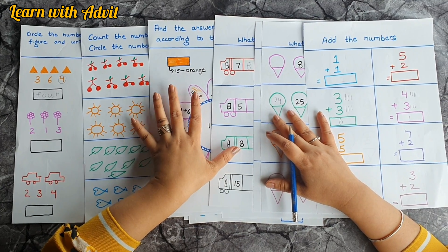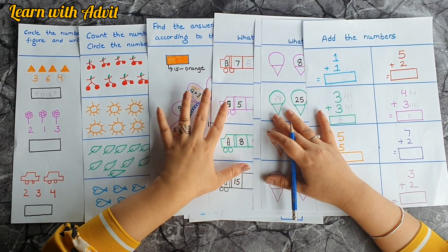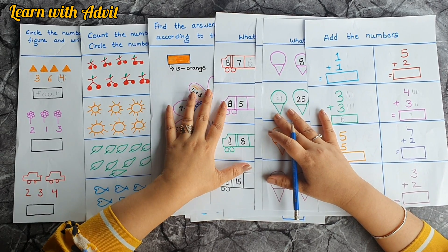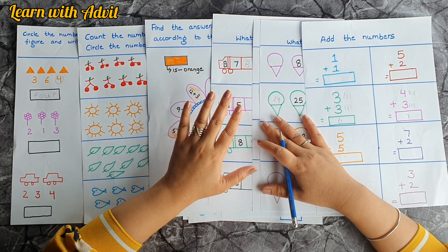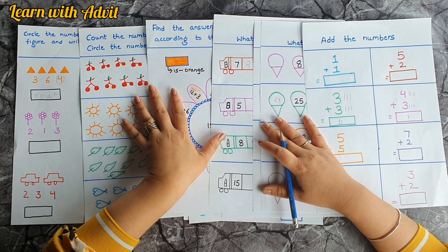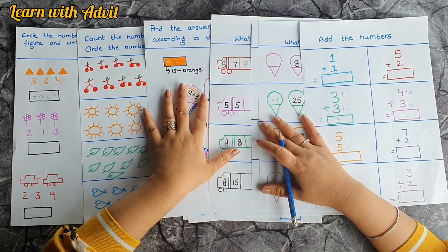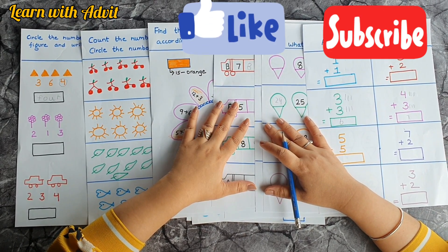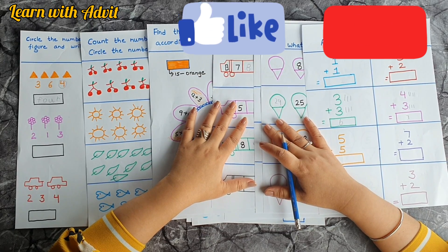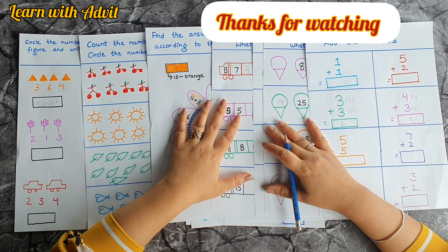Okay, I hope you like this worksheet. So these worksheets are suitable for 5 to 6 years. If you also want to do this worksheet with your kids at home, please download this from the link provided in the description below. For more learning videos, please like, share, and subscribe to our channel, Learn with Advit. Thanks for watching, see you next time. Bye-bye.